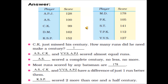So let us check our answers once again. CK just missed his century — he needed 1 more run. AS and CK scored almost equal runs. AS scored a complete century, no more, no less. Most runs scored by any batsman: it is MD with 178 runs. APJ and VVS have a difference of just one run between them; the answer can also be AS and CK. And KSP scored 2 more runs than 1 and a half century.